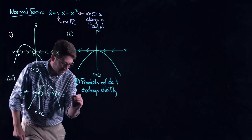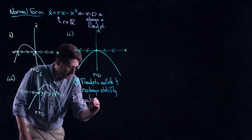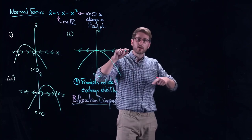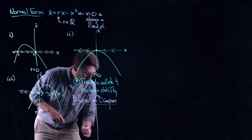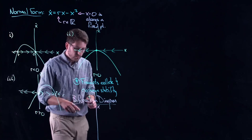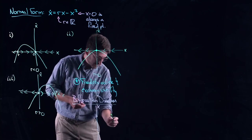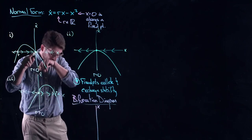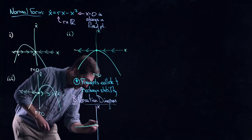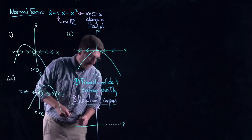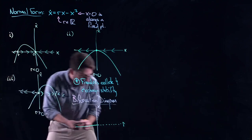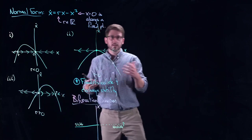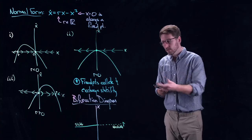Now let's look at the bifurcation diagram. Remember, we can capture everything interesting in a bifurcation diagram. For the saddle node it was a parabolic arc on its side. For the transcritical bifurcation: at x = 0 there is always a fixed point. When r is negative it's stable, when r is positive it's unstable. I draw stable as a solid line and unstable as a dashed line.